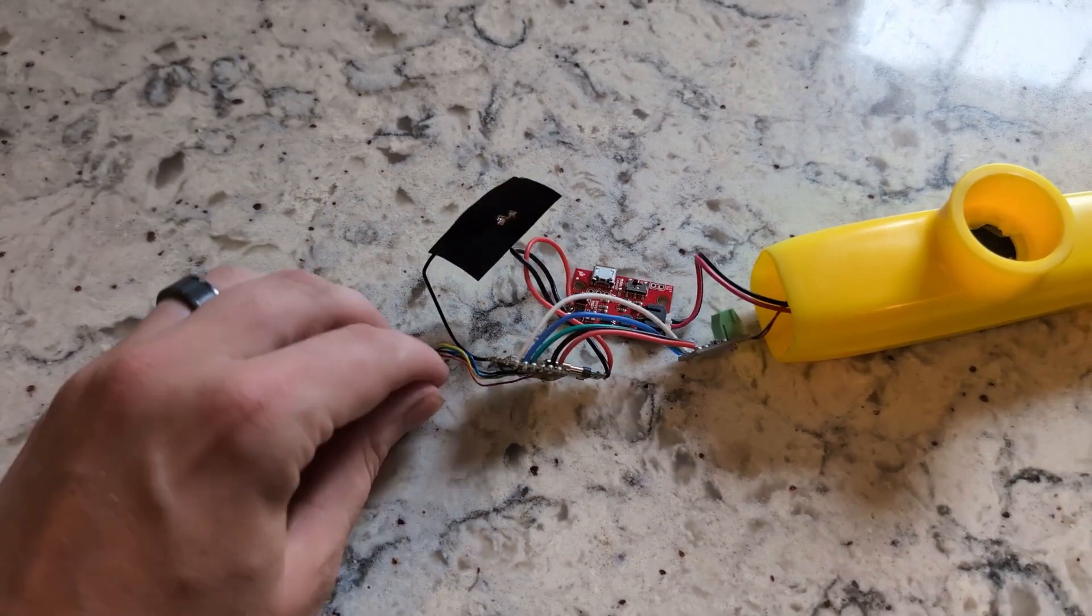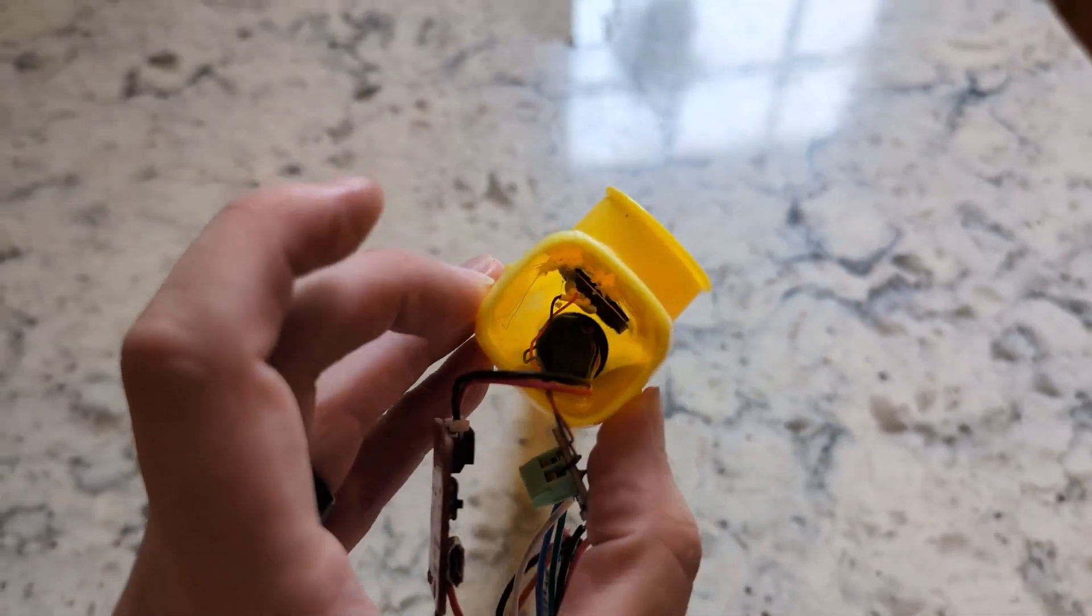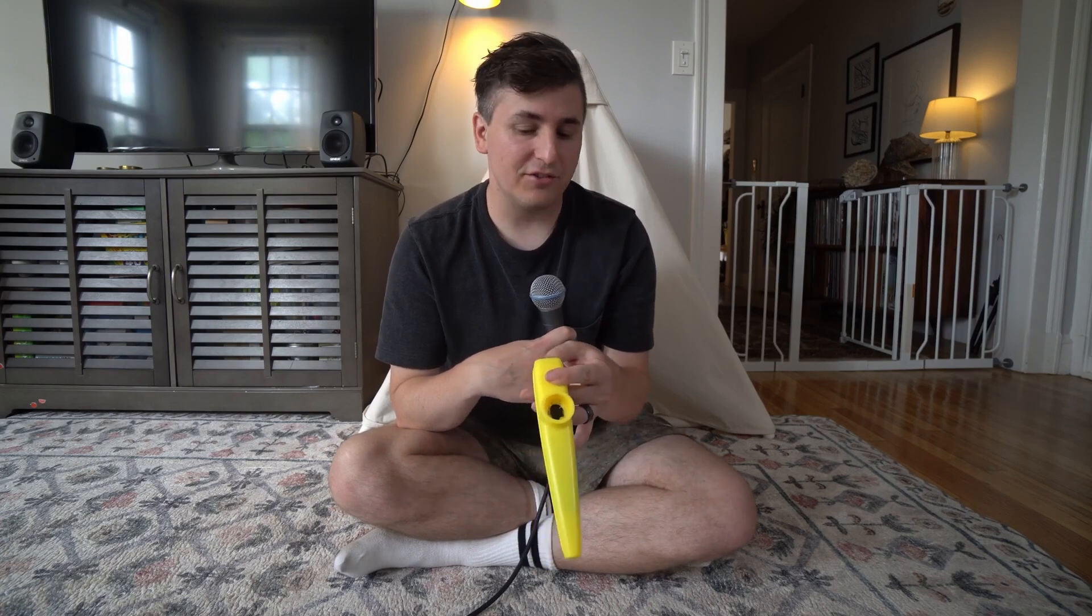To make a kazoo that never plays a wrong note, Guy crammed one with a microphone, an ESP32 microcontroller, a speaker, a battery, charging board, and an amplifier.